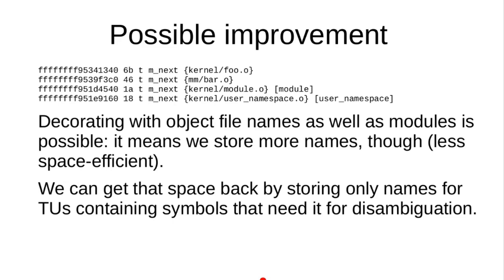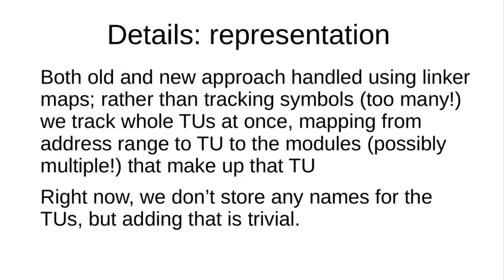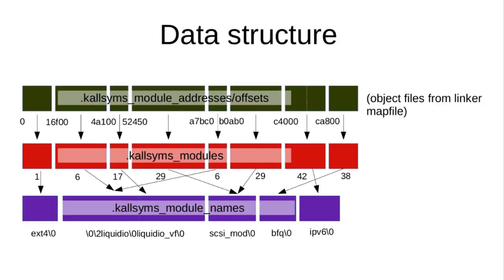There is one unavoidable piece of second-class citizenship for out-of-tree modules: we can't share names in the string tables across separate module string tables — but it's not a lot of extra space. For many modules we can omit these tables completely if there's only one object file or no ambiguities at all, ending up the same as today.